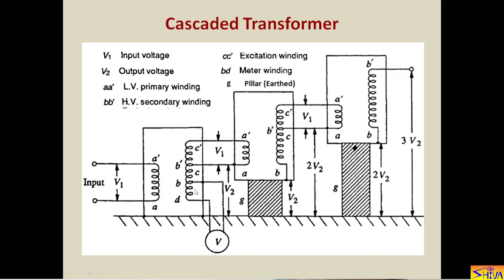In the first unit there is one additional winding — Bd — which is the measuring winding. A voltmeter is connected across it, calibrated in terms of the final output voltage.